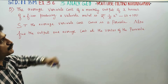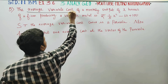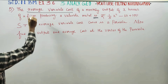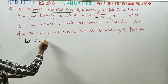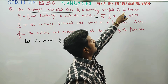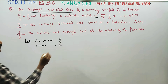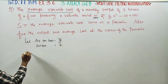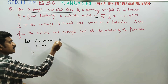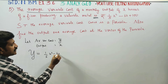The average variable cost of monthly output of x units of a firm producing a valuable metal is given by: let average variable cost be y, and output (production) be x. The equation is: average variable cost y is equal to (1/5)x squared minus 6x plus 100.